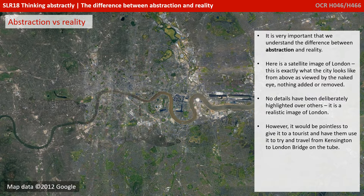It's very important that we understand the difference between abstraction and reality. Here's a satellite image of London. This is exactly what the city looks like from above, as viewed by the naked eye — nothing added, nothing removed. No details have been deliberately highlighted over others. It is a realistic image of London.